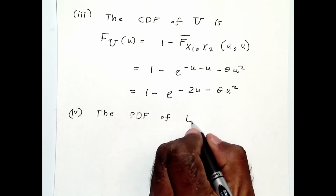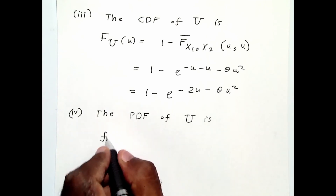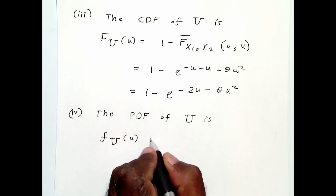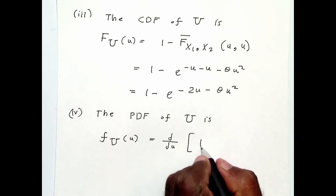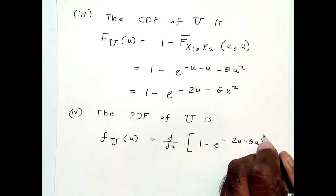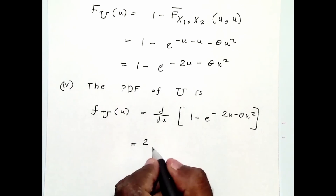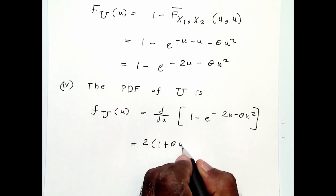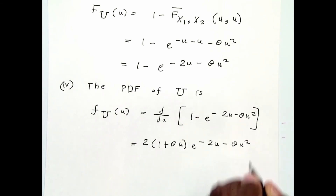For part 4, the PDF of U is simply the derivative of the CDF. Differentiating gives 2(1 plus theta·u) times e^(minus 2u minus theta·u squared). That is the PDF of U.